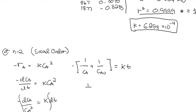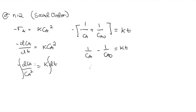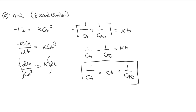Distributing the negative sign gives negative 1 over CA minus 1 over CA0 equals kT. Then transposing 1 over CA0 to the other side, we get 1 over CA equals kT plus 1 over CA0. This is our linearized form for second order reaction.